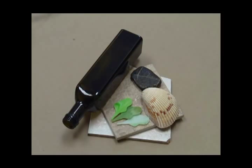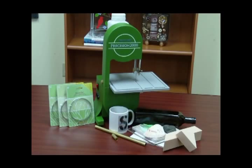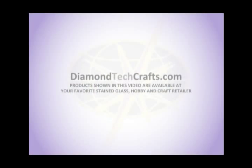Use the diamond blade to cut shells, rocks, ceramic tile, odd shaped bottles and much more. Have fun with the Precision 2000, but make sure you choose the right blade for the right material being cut.